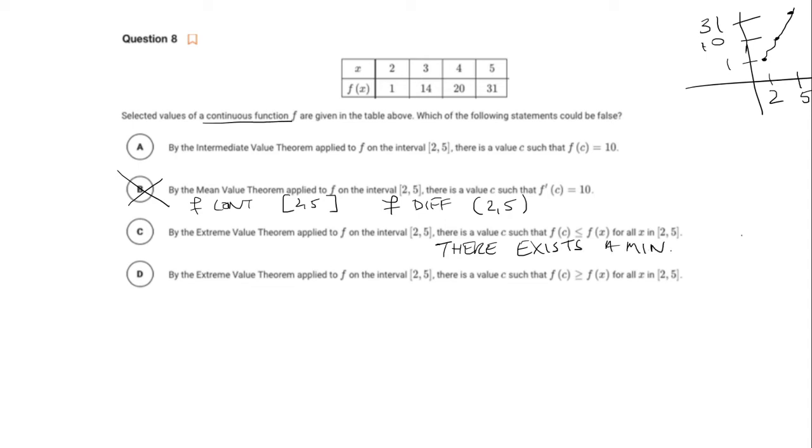And this is true, because if it's continuous and it's closed, we know the minimum exists. And the reason we know that is because it's continuous and you're given a finite bound.